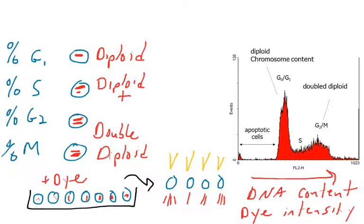DNA content increases as you go along the x-axis. The y-axis refers to the number of cells that are at that intensity. For example, you examine 10,000 cells via the cell cycle assay.